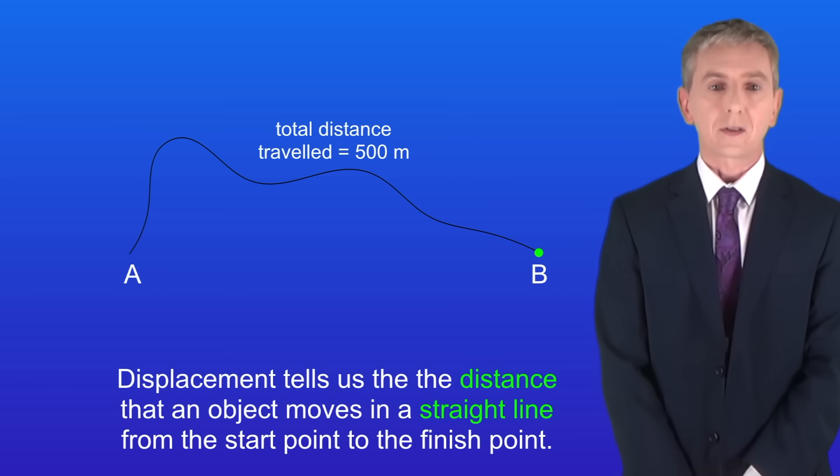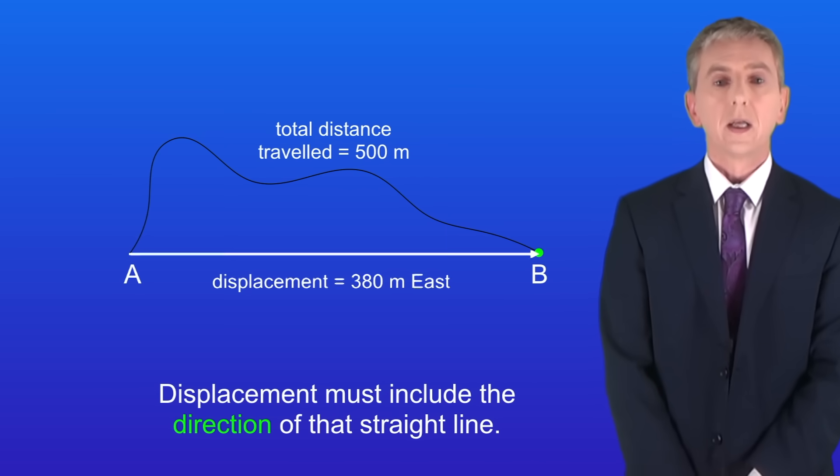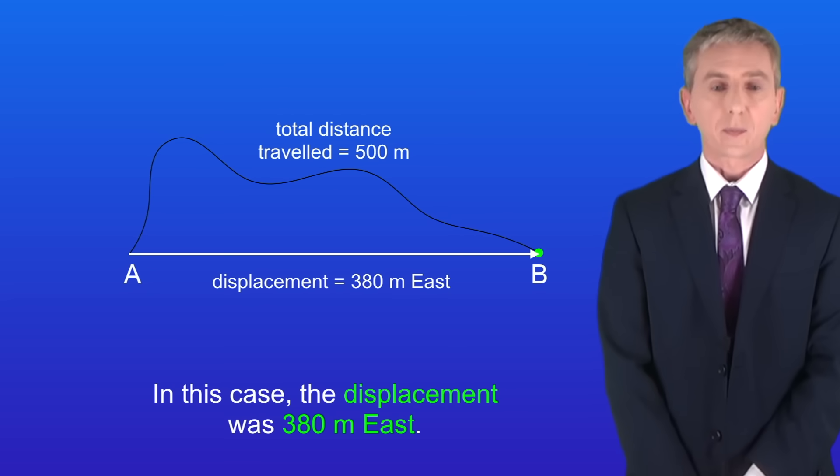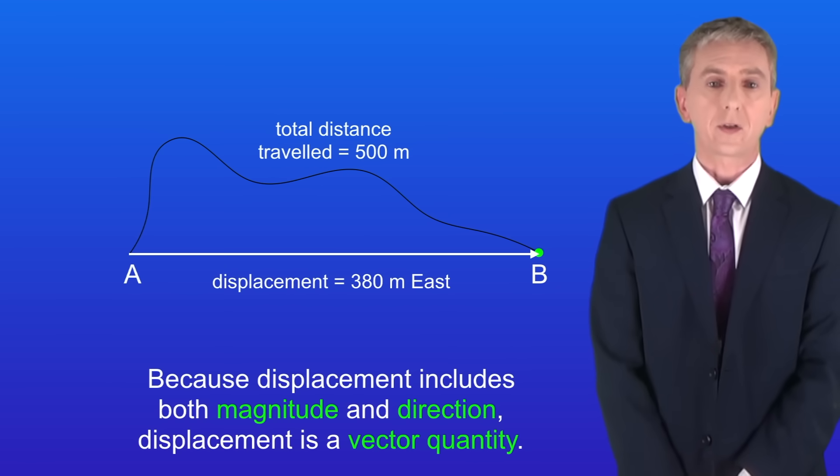Now displacement tells us the distance an object moves in a straight line from the start point to the finish point, and displacement must include the direction of that straight line. So I'm showing the displacement here. In this case the displacement was 380 meters east. Now because displacement includes both magnitude and direction, displacement is a vector quantity.